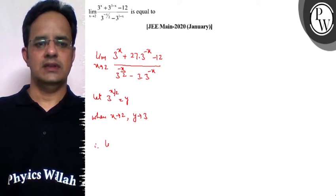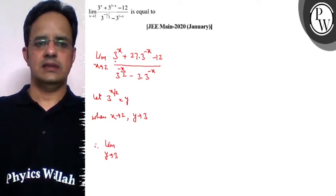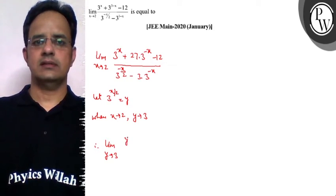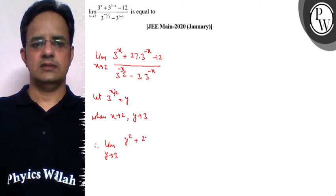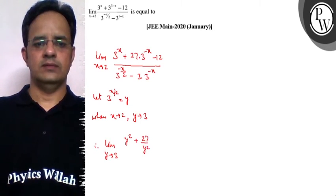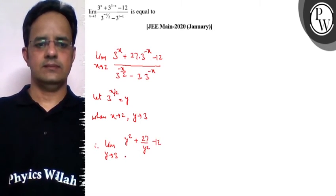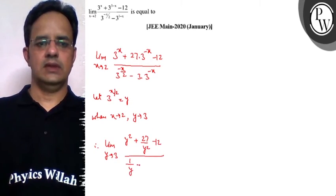So therefore, the limit is limit y tending to 3. 3 raised to power x means y square. We can write this as plus 27 upon y square minus 12. It is 1 upon y, and here we have 3 upon y square.